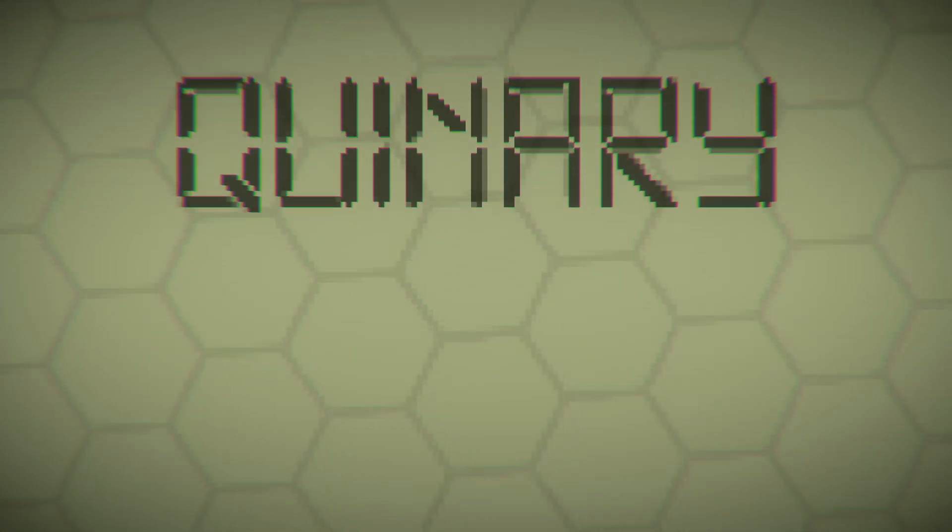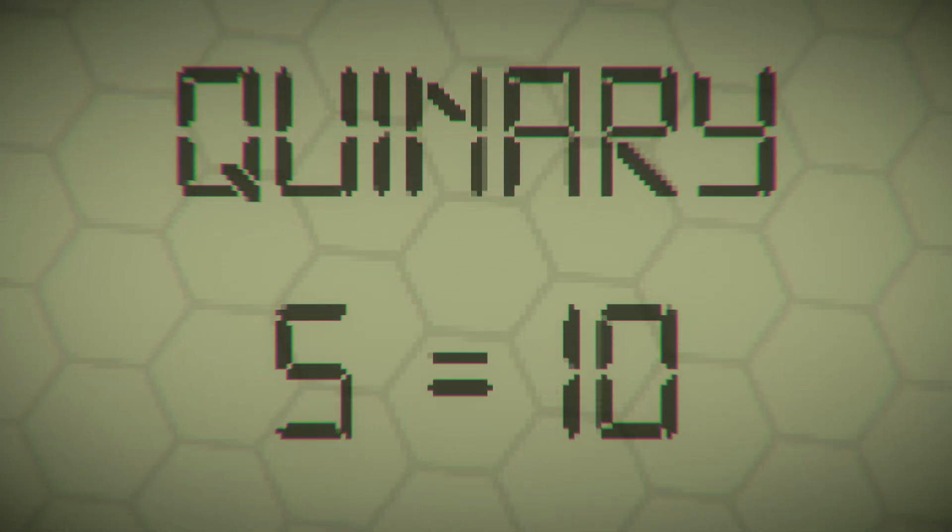As an example, in a quinary system, it would only take a value of 5 to get into the next digit and only a value of 25 to get into the hundreds.